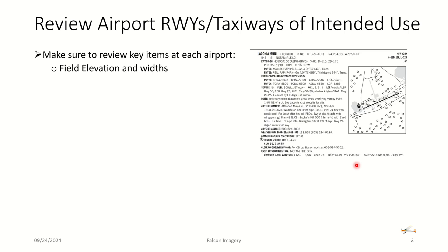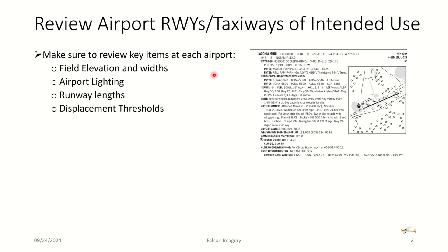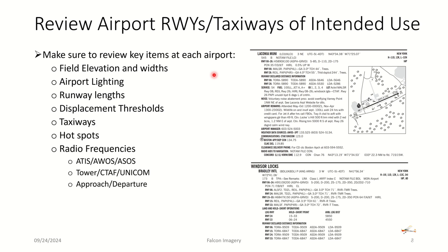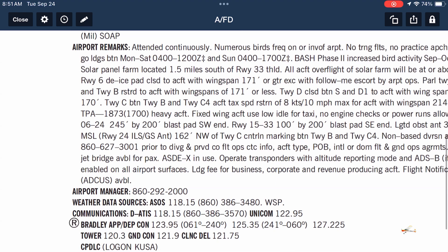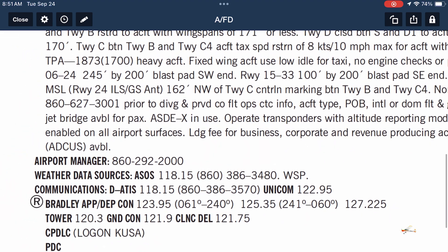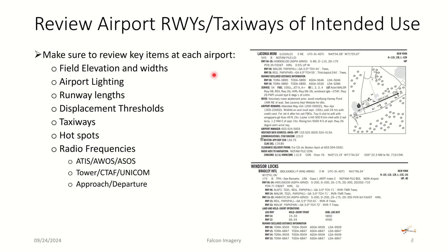We also want to take a deep dive look at the runways and taxiways of intended use. Make sure to review key items at each airport: field elevation, runway lengths and widths, airport lighting, displacement thresholds, taxiways, and hotspots. Also make sure you look at all the radio frequencies and make note of them — particularly your weather-related ones: ATIS, AWOS, or ASOS, the tower, CTAF, unicom frequencies, and any approach or departure frequencies you may need as you come into your arrival area. Lastly, look at any airport remarks regarding services and tower operation.